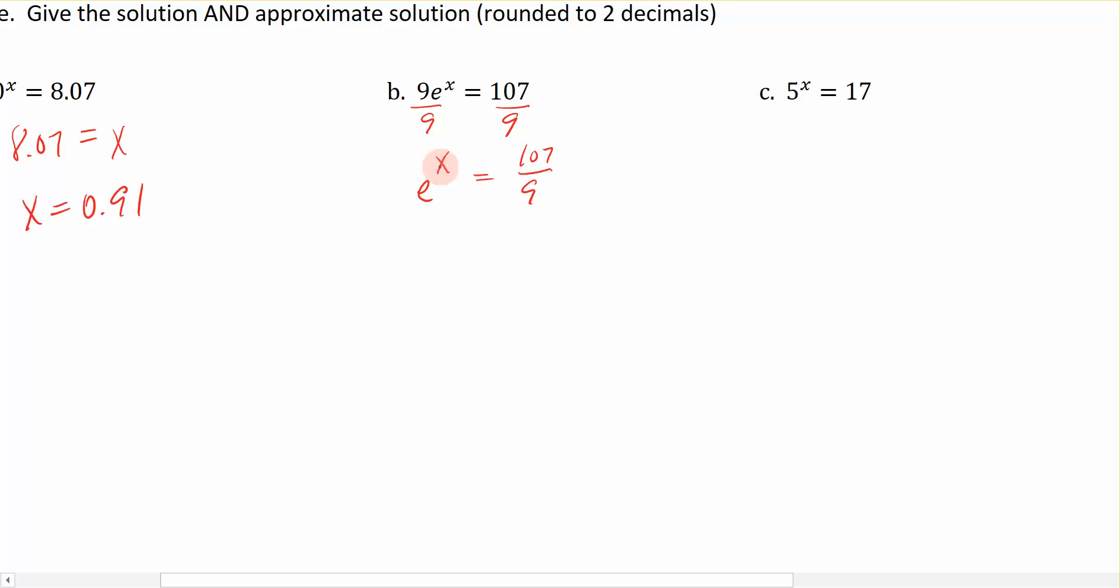Because my variable x that I'm solving for is in this exponential position, I'm going to rewrite this using the definition of logs. Start with the base. The log of base e, remember that the log of base e is just ln of the argument, 107 divided by 9, is equal to the exponent x. So x equals the natural log of 107 divided by 9.